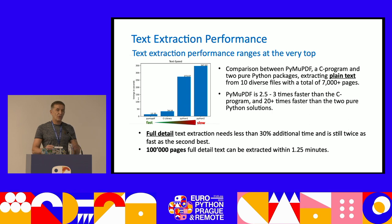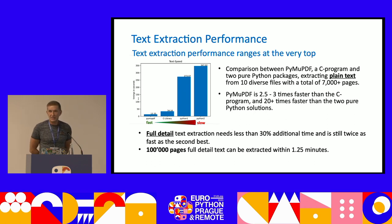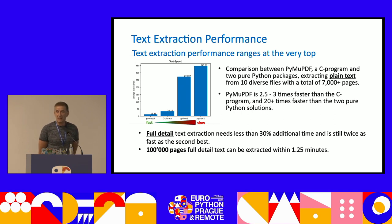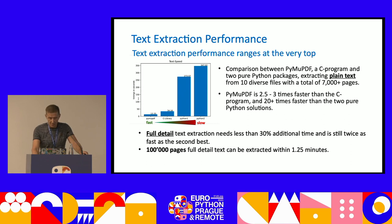A few words on speed. PyMuPDF is represented by the small blue box on the left. Another C library is three times slower. The two large blue boxes are popular pure Python packages doing the same thing — they are 20 or 35 times slower. Overall, PyMuPDF is capable of processing 100,000 pages with full text detail in approximately 1.25 minutes.